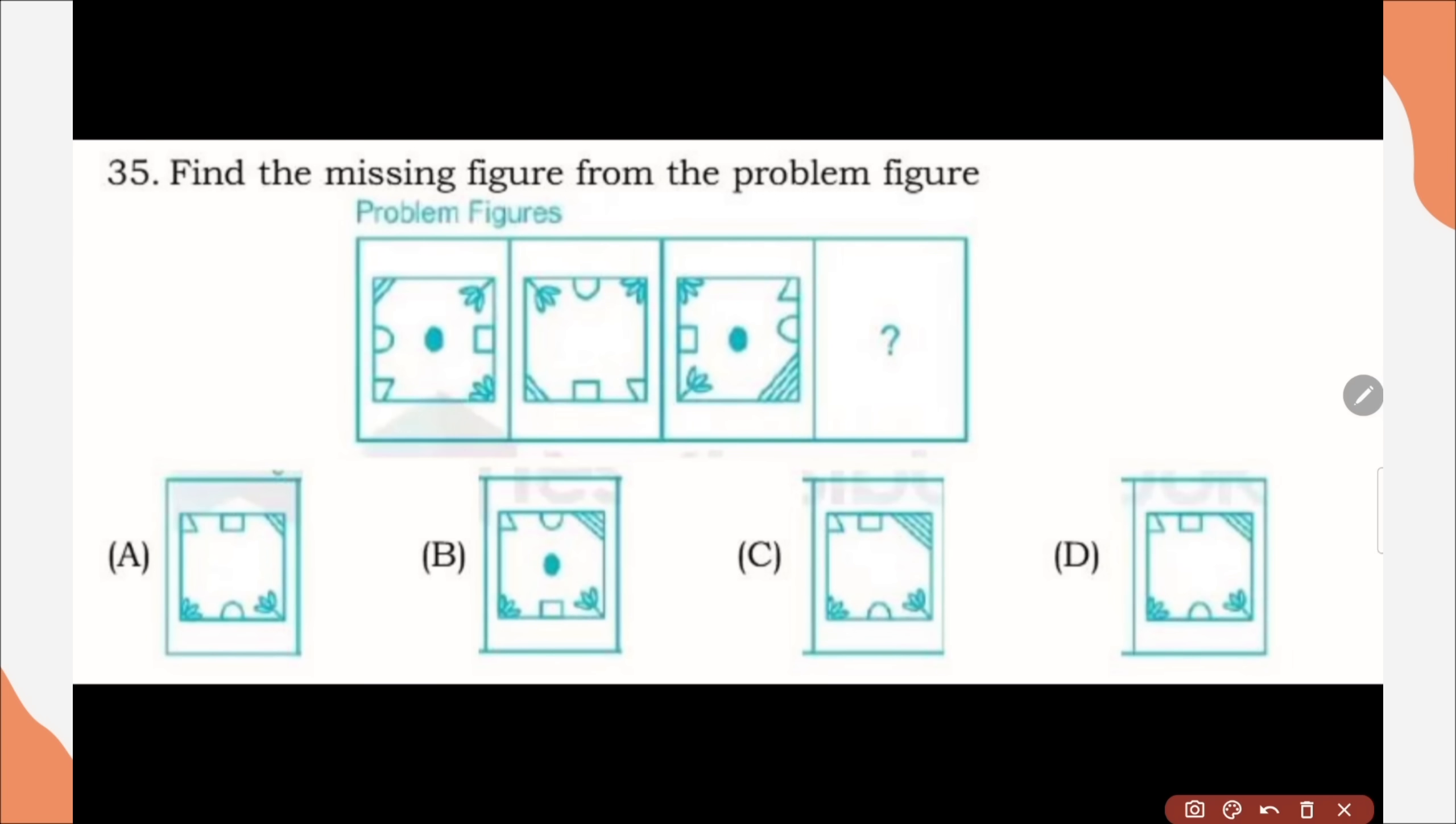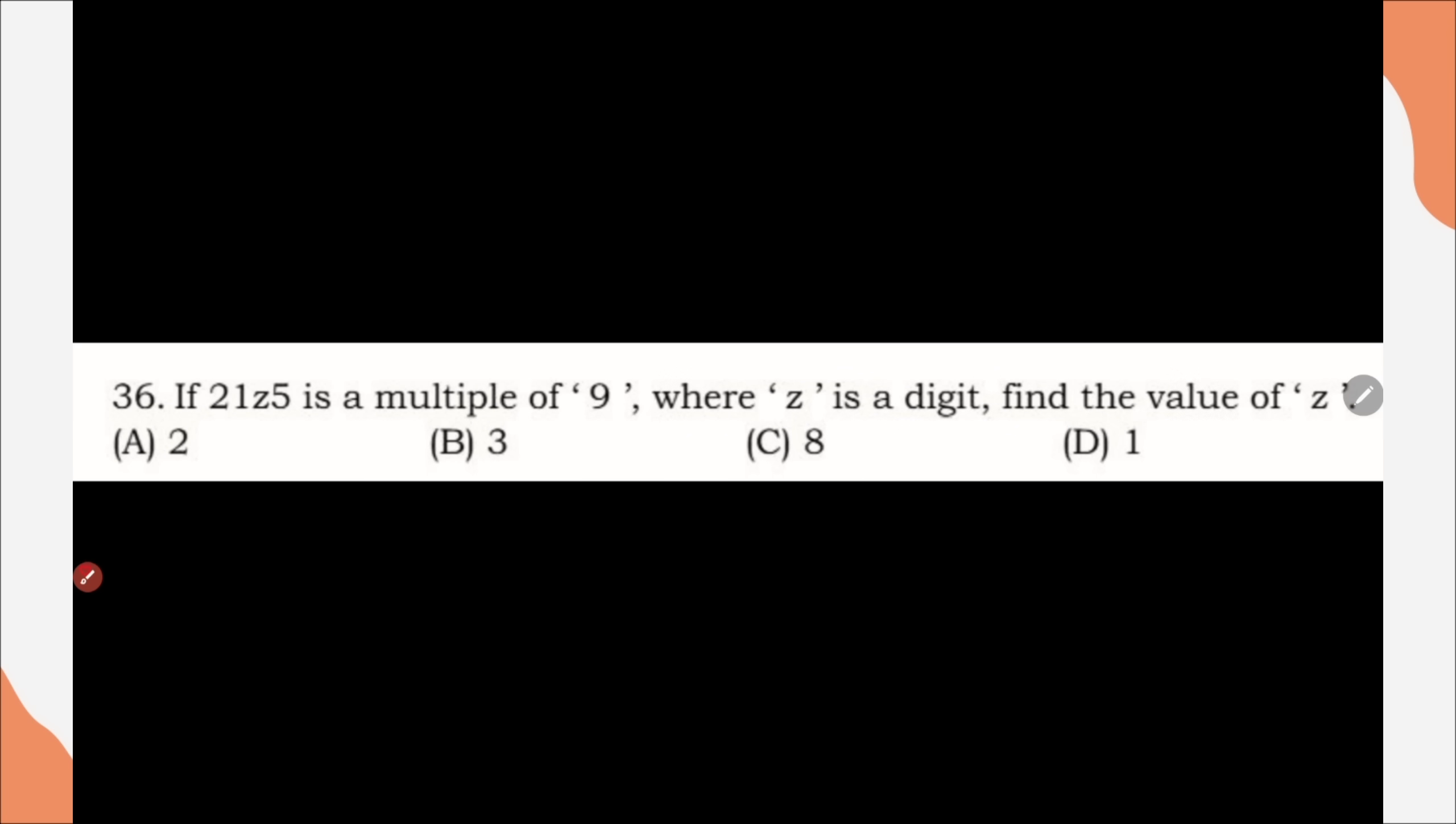Question number 35, find the missing figure from the problem figure. Here, correct option is option C. Next, question number 36, if 21z to 5 is a multiple of 9, where z is a digit, find the value of z. Here, correct option is option D, 1.